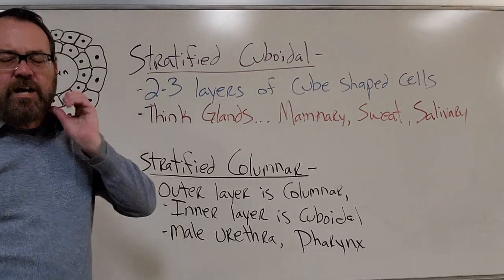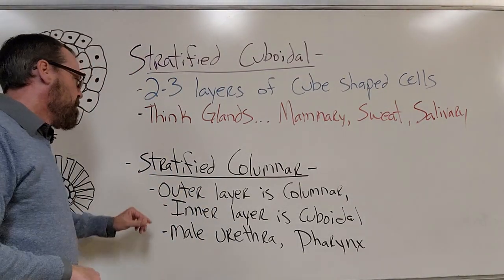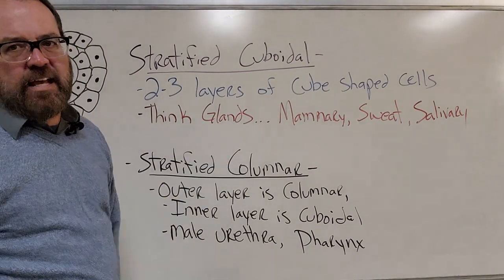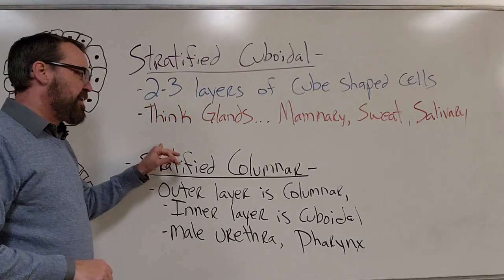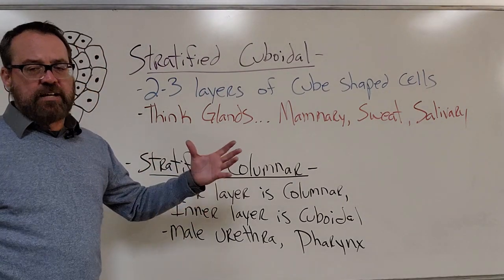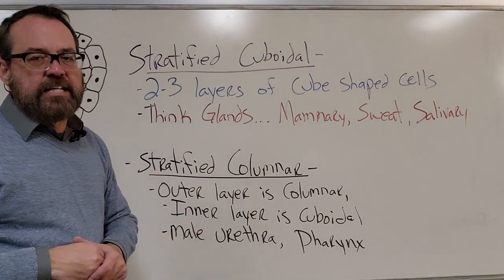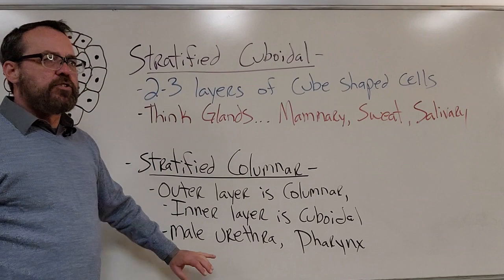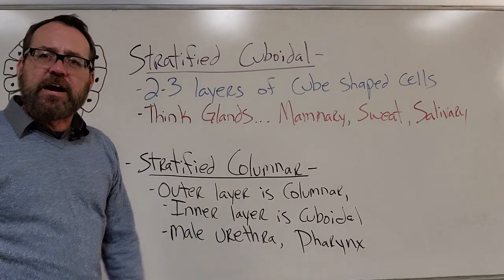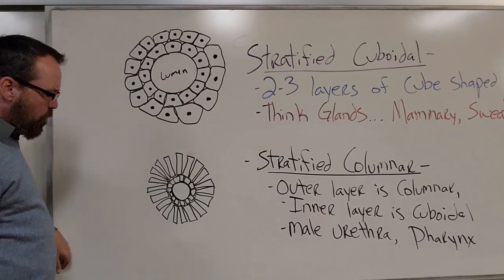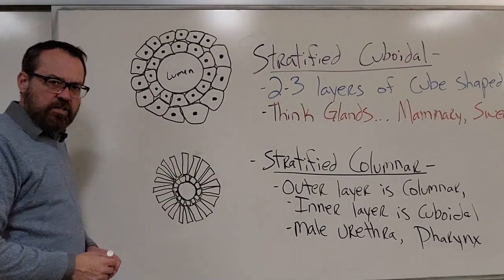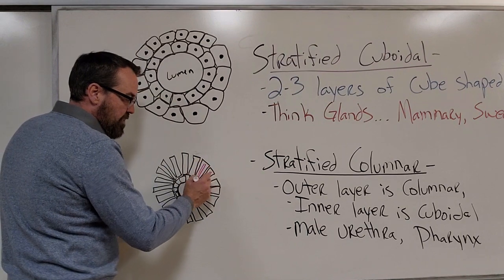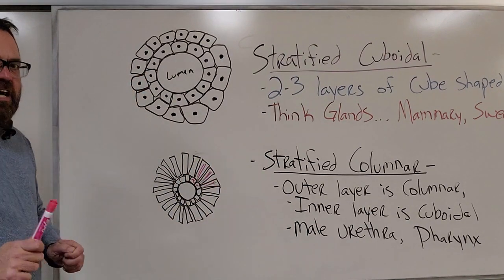Then I've got stratified columnar. Stratified columnar is a little different — the name makes you think it's multiple layers of tall or elongated cells, but that's not quite the case. The outermost layer of cells is columnar, but the inner layer underneath is cuboidal tissue. So we end up with cuboidal and columnar together in stratified columnar. We find this in parts of the male urethra and in parts of the pharynx.